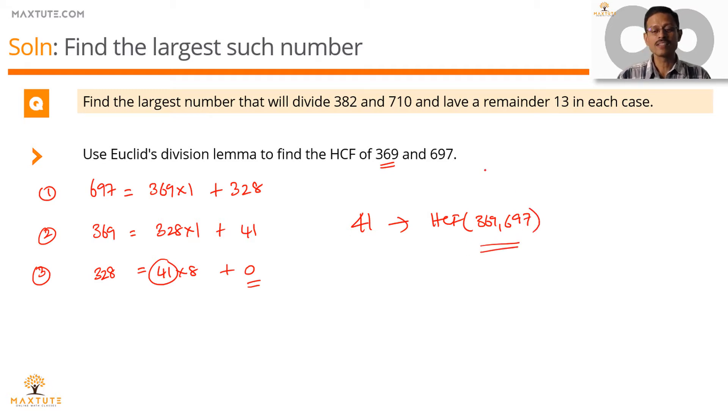The HCF of these two numbers is the largest number that will divide 382 and 710, leaving a remainder of 13 in each case. That we have seen in the last slide. So, the largest number that we are looking for, x, is equal to 41.